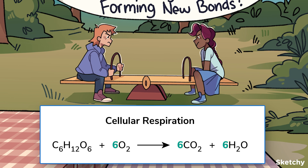In the balanced equation for cellular respiration, every one molecule of glucose combined with six molecules of oxygen gives you six molecules of carbon dioxide and six molecules of water. Unlike subscripts, coefficients can be manipulated in order to balance things out. And once you have a balanced equation, you can make all kinds of other calculations, like determining percent yields or limiting reagents.